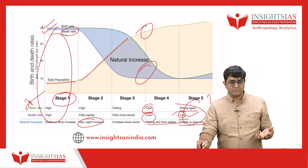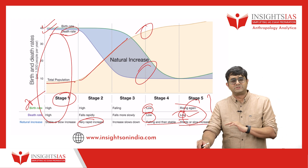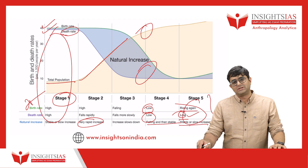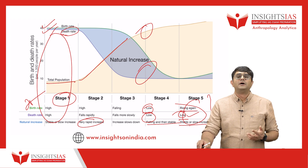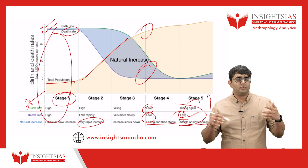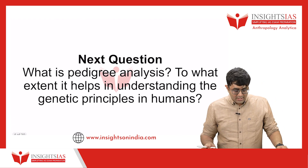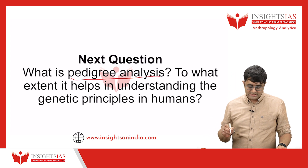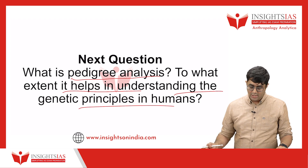To conclude, you can write about the fifth stage and the significance of demographic transition theory — why it is important for policy makers, anthropologists, and demographers to understand the population structure of a country. In the next video, let us try to answer: what is pedigree analysis, and to what extent does it help us in understanding genetic principles in humans? Thank you for watching. Have a good day.